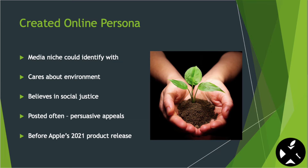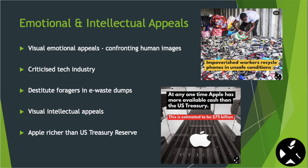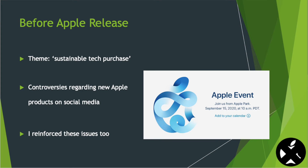Posting often enabled me to communicate many persuasive appeals before Apple's 2021 product release. I uploaded persuasive emotional appeals via confronting human images which criticised the tech industry, like pictures of destitute workers in e-waste dumps. I used visual intellectual appeals showing Apple as being richer than the US Treasury Reserve. Before the Apple release, I used the theme of sustainable tech purchase. When controversies regarding the new Apple products came out on Apple Sucks and The Verge, I reinforced these issues too.